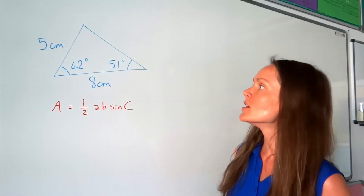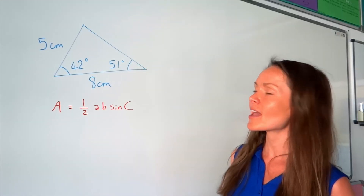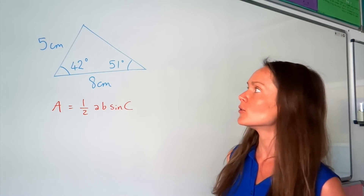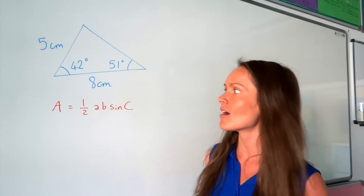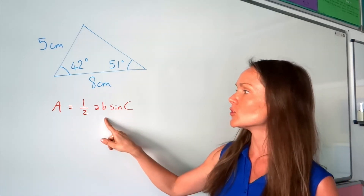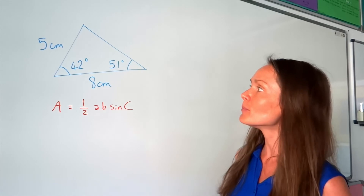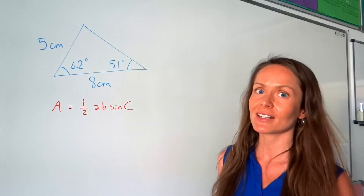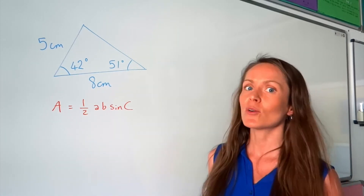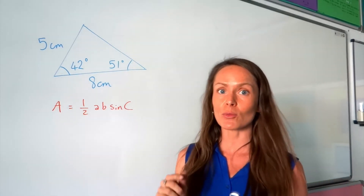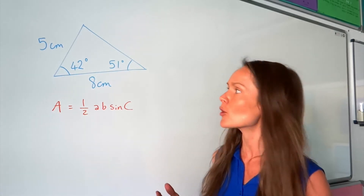On to the next question. We have to work out the area of the triangle, and because we don't know the perpendicular height, we're going to use this formula. Remember in the previous example, angle C was the angle in between the two sides that we know.